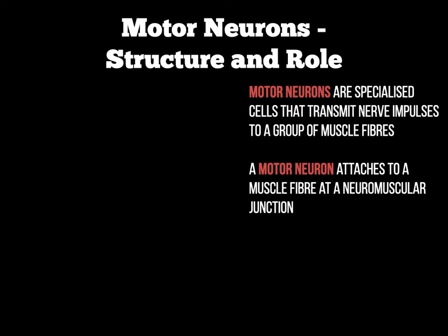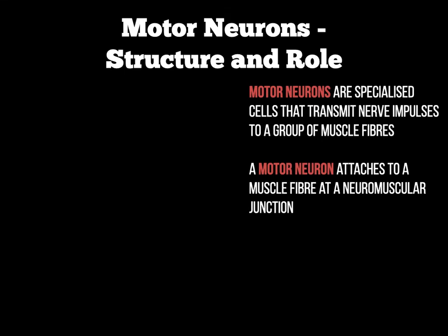I'll explain the neuromuscular junction in a moment, but that's a key phrase. At that neuromuscular junction, this is where the motor neuron will communicate the messages sent from the brain to the muscle fibre through nerve impulses.